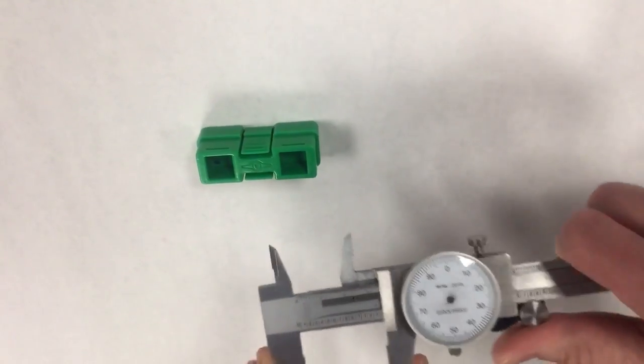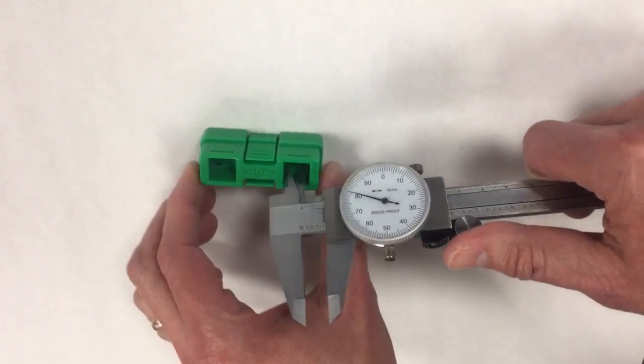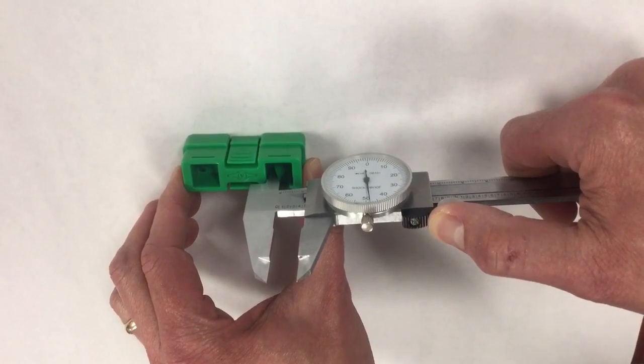If I want to measure the inside distance, I'm going to use the smaller teeth on the backside of the caliper, place them into the hole there, and expand it to get a measurement.